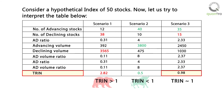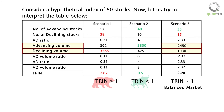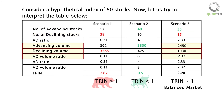When the TRIN is close to 1, it indicates a balanced market. Even though in Scenario 3 the majority of stocks are advancing, the market sentiment is indicated to be neutral by the TRIN. Volume plays an important part in determining TRIN for an index. Although the number of advancing stocks is more than the number of declining stocks, the volume traded in advancing stocks is not as high as it should have been considering the high AD ratio. This shows that the traded volume plays a major role when it comes to understanding market sentiments.